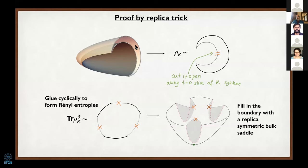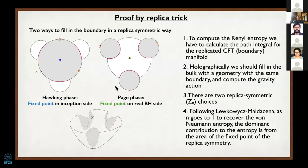We make a state that looks thermally entangled: I are the states of A, psi_I are the states of B. Suppose it's the same conformal field in A and B, so we can associate the states, and we consider a thermofield double-like state with weighting factors e to the minus beta E_I over Z, where E_I are the energies of the states in universe B. Universe B contains gravity—JT gravity—in addition to the CFT, and we can take positive or negative cosmological constant.